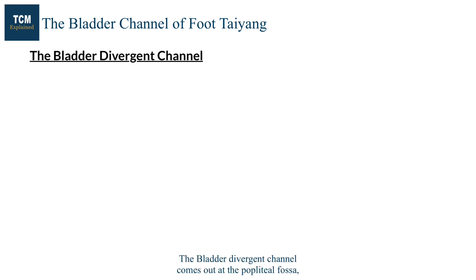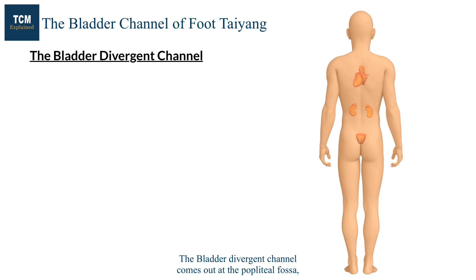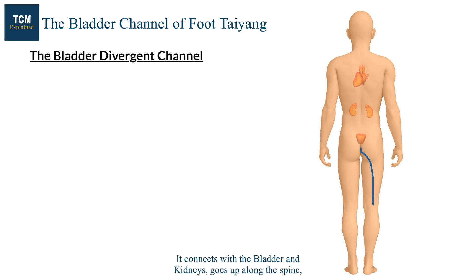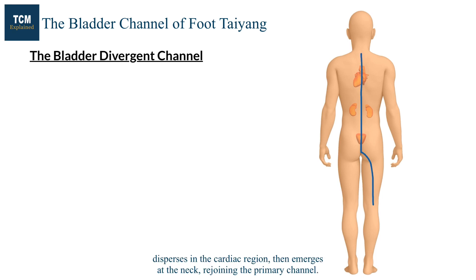The bladder divergent channel comes out at the popliteal fossa, goes up the thigh, and curves around the anus. It connects with the bladder and kidneys, goes up along the spine, disperses in the cardiac region, then emerges at the neck rejoining the primary channel.